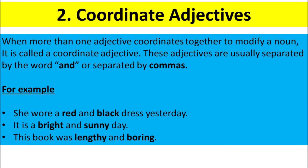Coordinate Adjectives. When more than one adjective coordinates together to modify a noun, it is called a coordinate adjective. These adjectives are usually separated by the word 'and', or separated by commas. For example, She wore a red and black dress yesterday. It is a bright and sunny day. This book was lengthy and boring.